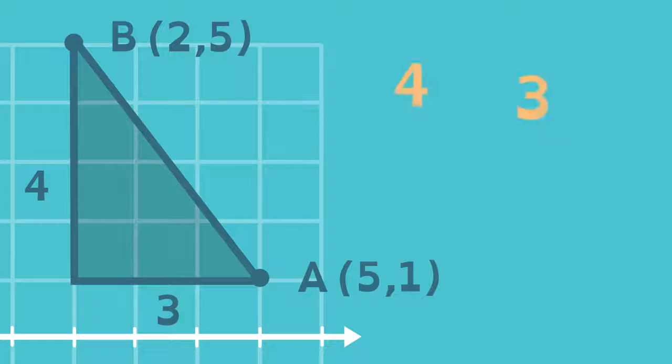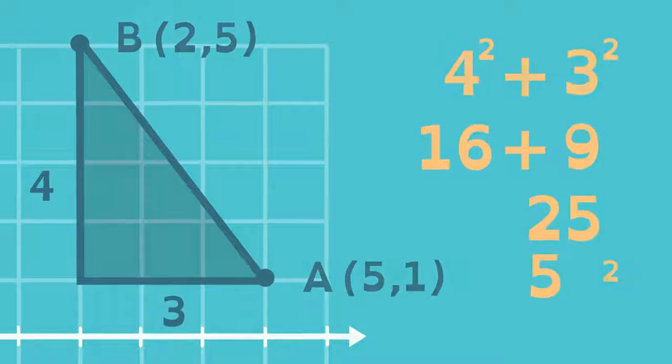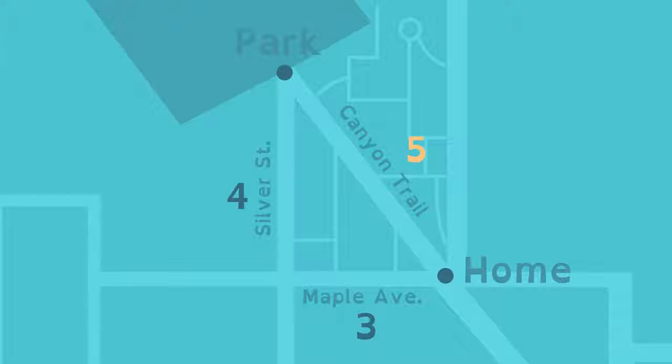Now apply the Pythagorean Theorem. 4 squared plus 3 squared equals 16 plus 9, which when added together equals 25. That's the same as 5 squared. Again, the length of Canyon Trail is 5 miles.